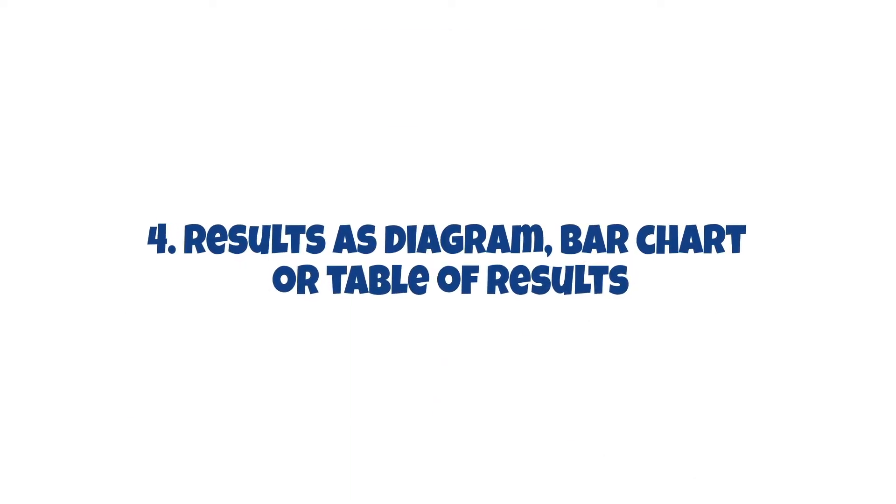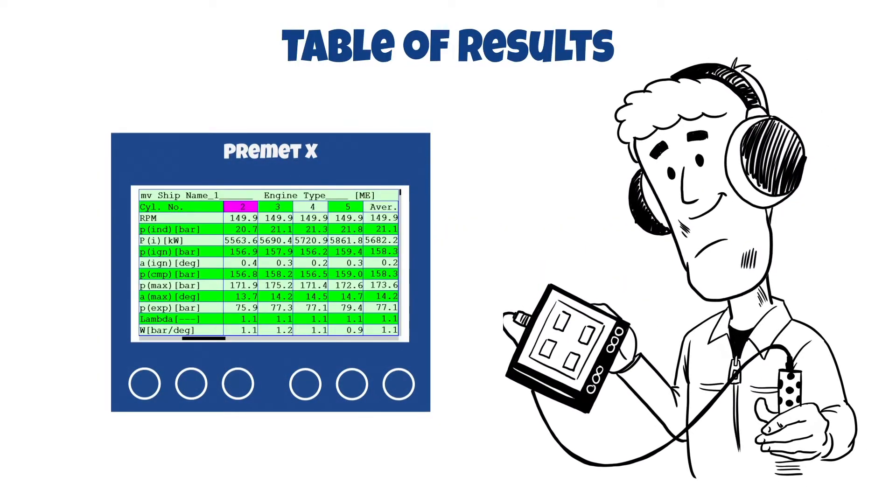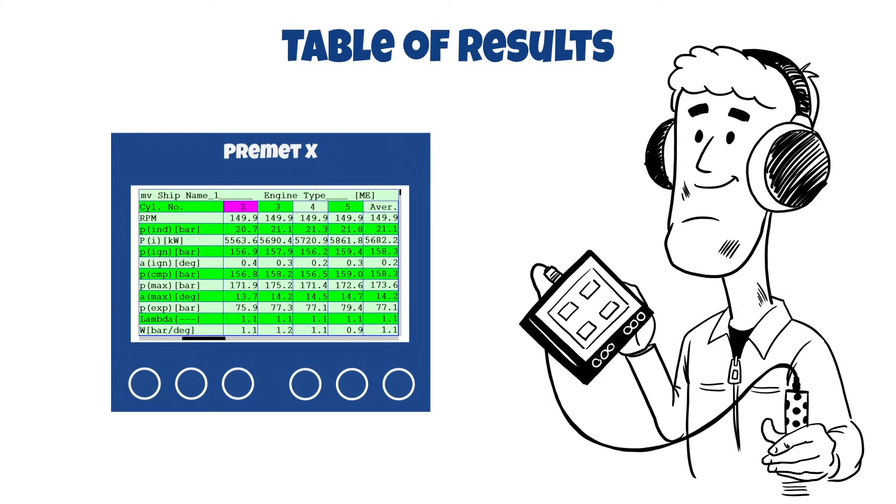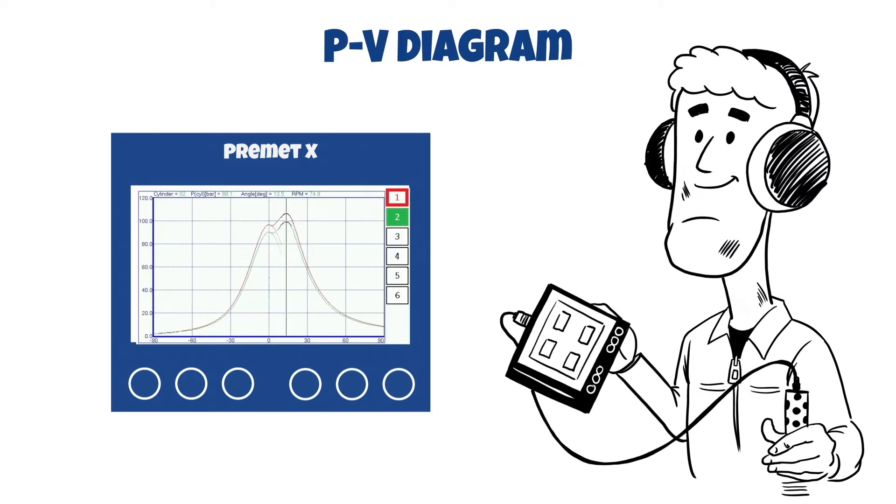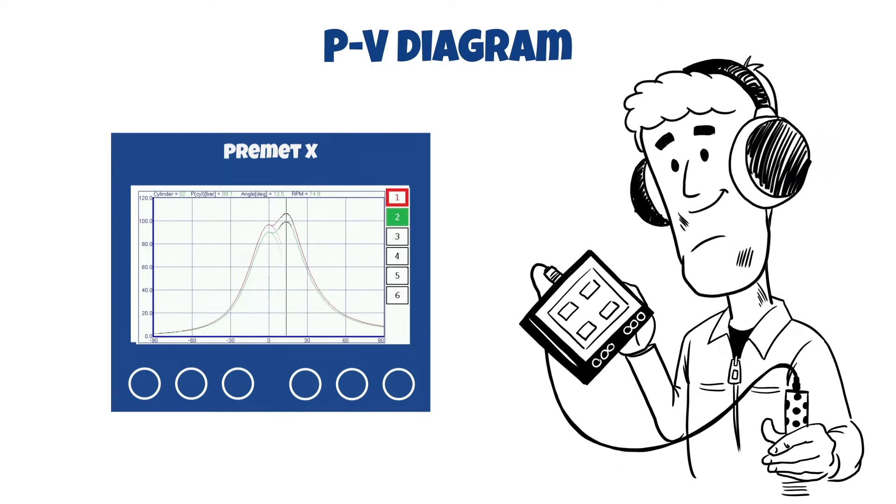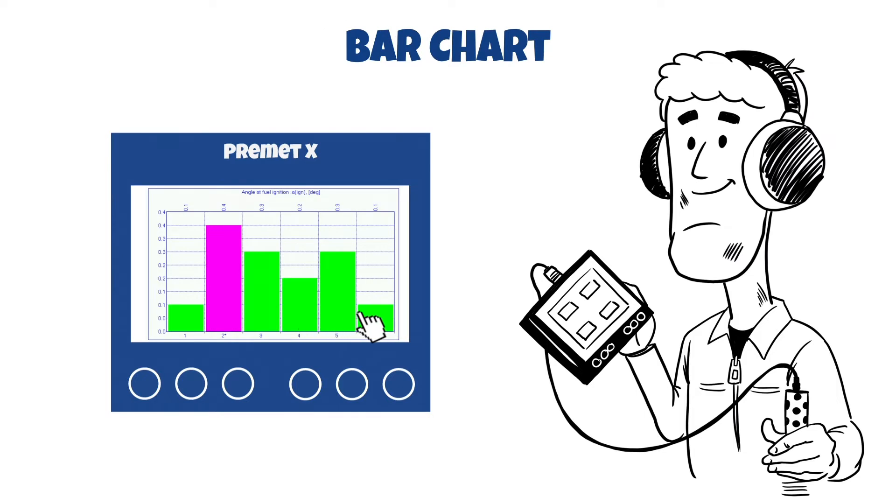Results are available as diagram, bar charts or table. All measured and calculated values are available like you prefer. You can not only see the actual reading but also with one glance see differences between the actual reading and the readings from all other previous cylinders.